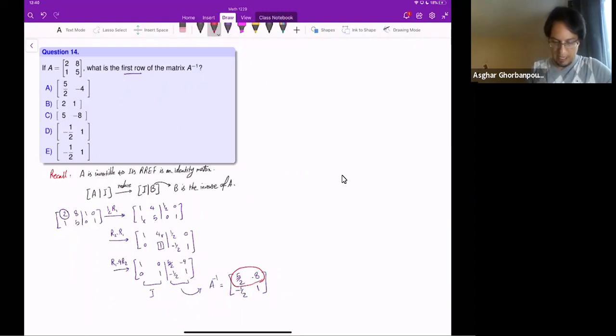And that is 5/2... oh why did I change it to 8? This is negative 4, sorry. That was just a typo. So 5/2 and negative 4 is the first row of the inverse matrix.